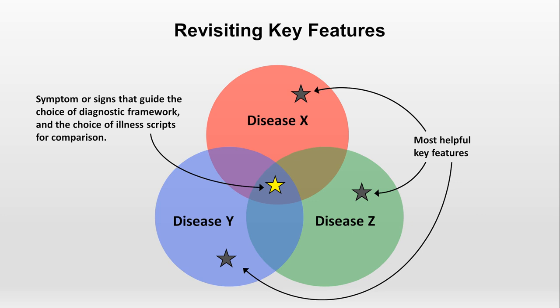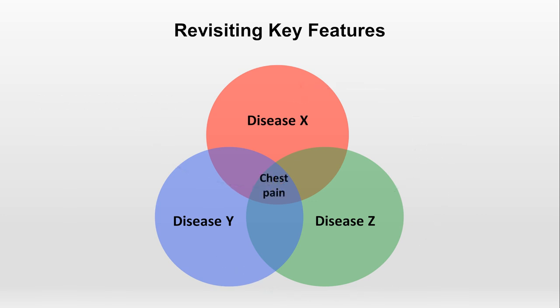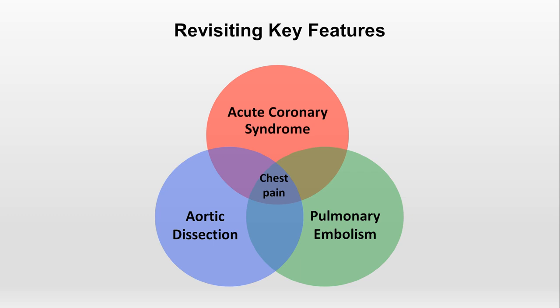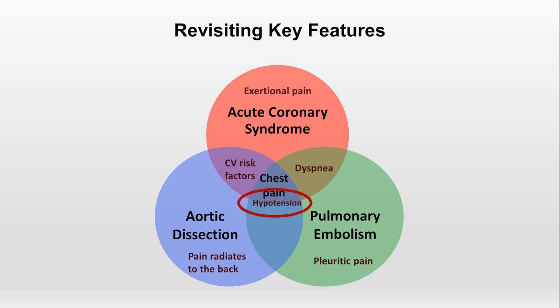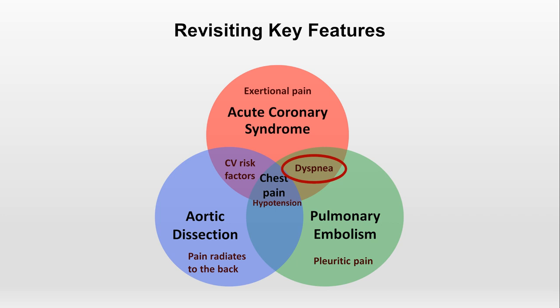To see what I mean, let's consider a specific example: a patient presenting with acute chest pain. Suppose we are considering as potential diagnoses acute coronary syndrome, aortic dissection, and pulmonary embolism — all life-threatening conditions. What about hypotension? Although the mechanism is different in each condition, hypotension can be seen in all three, so it's not a key feature here. Cardiovascular risk factors are associated with ACS and aortic dissection but not with PEs, so modestly helpful. Likewise, concurrent dyspnea is seen with ACS and PE but would be unusual in an aortic dissection, so also modestly helpful.